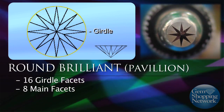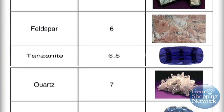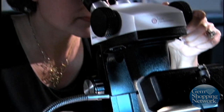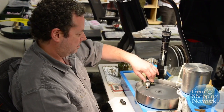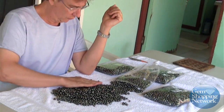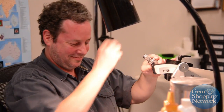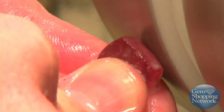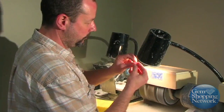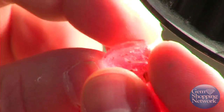At Gem Shopping Network, we take pride in educating our clients. We do this by connecting experts in the field — such as gemologists, designers, lapidarists, and pearl farmers — directly with our audience. One of these experts is Sean, Gem Shopping Network's chief lapidarist. We asked him to explain the difference between a Portuguese round and a standard round brilliant cut.